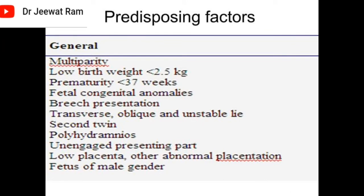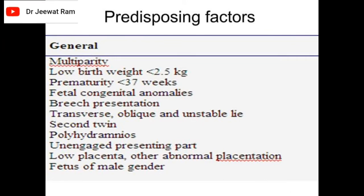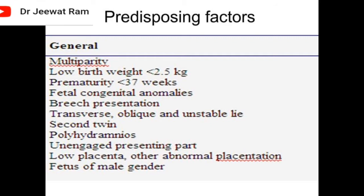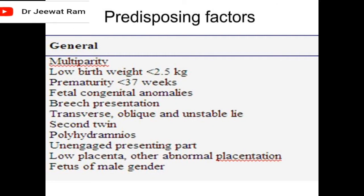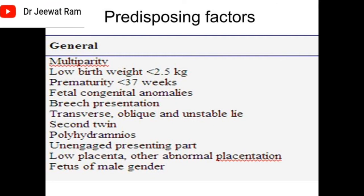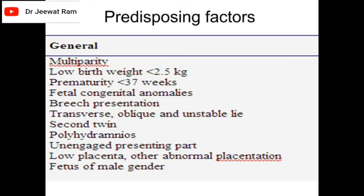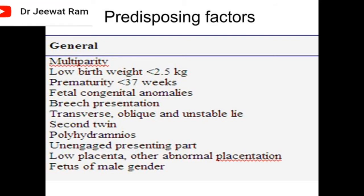Predisposing factors — general: multiparity, low birth weight less than 2.5 kg, prematurity less than 37 weeks, fetal congenital anomalies, breech presentation, transverse oblique and unstable lie, second twin, polyhydramnios, unengaged presenting part, low placenta, and abnormal placentation.